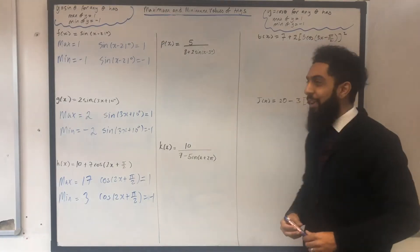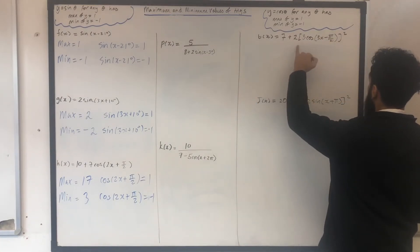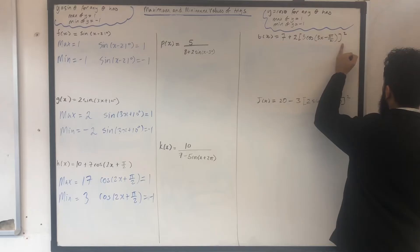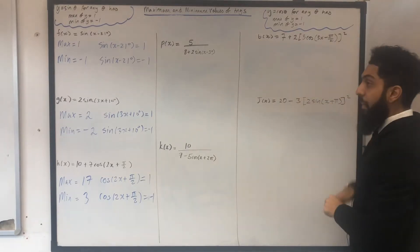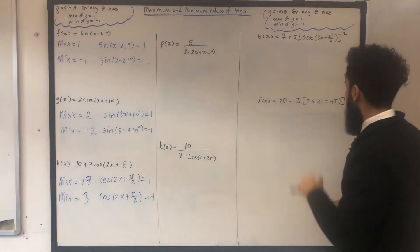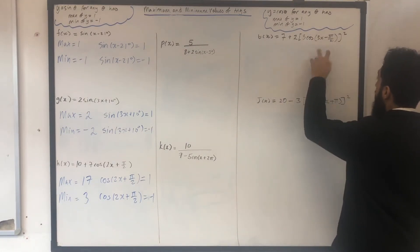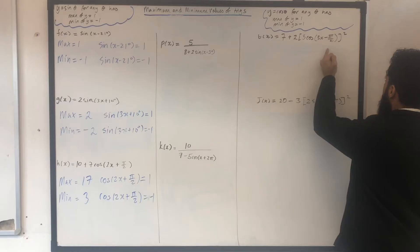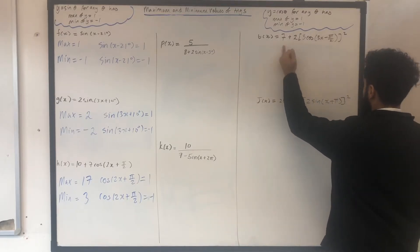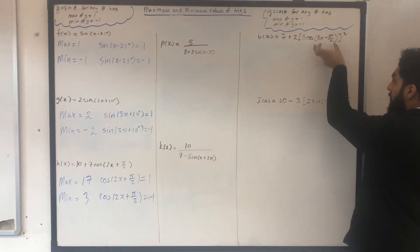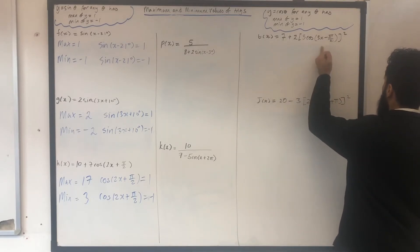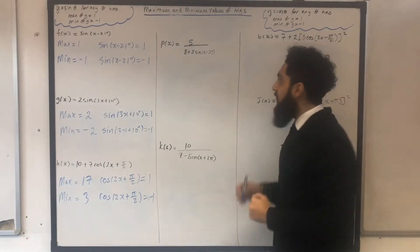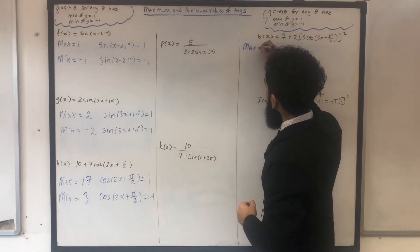Let's move on to the next function: t of x equal to 7 plus 2 times, in square brackets, 3 cos in bracket 3x minus 3 pi over 2, end square bracket, squared. The power of 2 makes things extremely interesting. My first observation is: if I replace the cos with 1 or minus 1, I will get the same output. Replacing cos with 1: 3 times 1 is 3, 3 squared is 9, times 2 is 18, plus 7 is 25. Replacing cos with minus 1: 3 times minus 1 is minus 3, minus 3 squared is 9, times 2 is 18, plus 7 is 25. So the maximum value of t of x is 25.